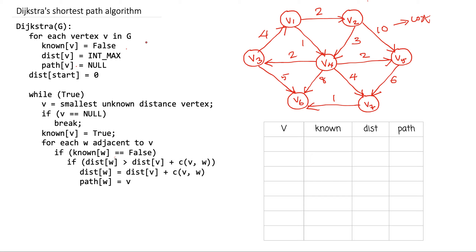The algorithm is quite simple. For each vertex v in G, we have certain variables associated with each vertex: the known array, the distance array (dist array), and the path array. We have to initialize these values to begin with, so we create a table to track the values of these variables during execution.